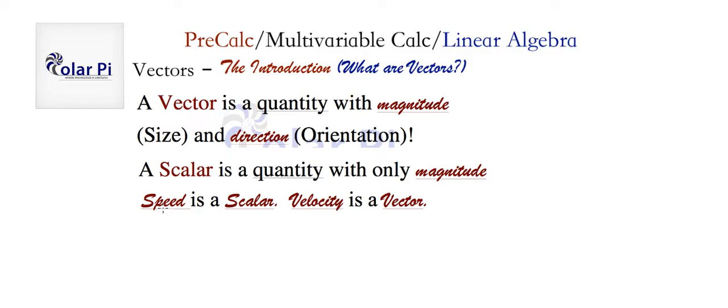Whereas for velocity, 60 miles per hour needs to be accompanied with west or east. Because 60 miles per hour west can get you to Cali and 60 miles per hour east can get you to DC. So you want to know which direction in addition to the size.